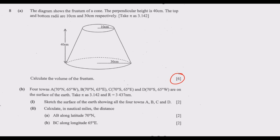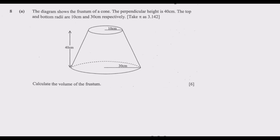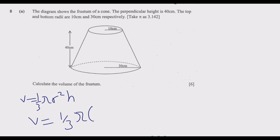Let us first focus on Question A, which carries 6 marks, then move to Question B. When you look at Question A, there are two approaches we can use. You can just memorize the formula and go with the volume of the frustum: V = one-third pi times (R² + r² + R·r) times h. Once you substitute, you get the answer — that's the easiest way.